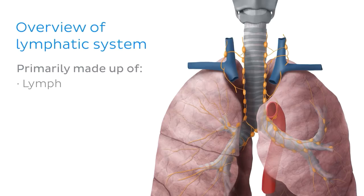Lymph originates as interstitial fluid and contains a variety of substances such as leukocytes, plasma proteins, water, chyle, glucose, and salts.